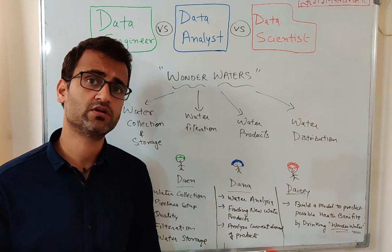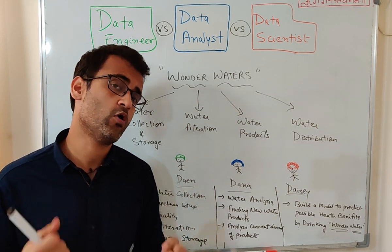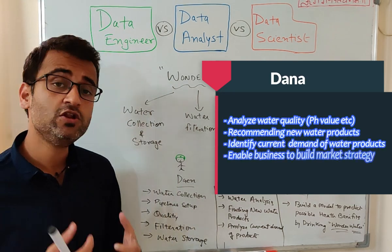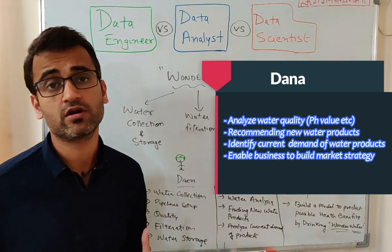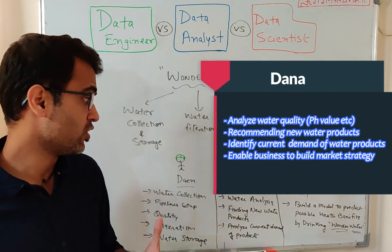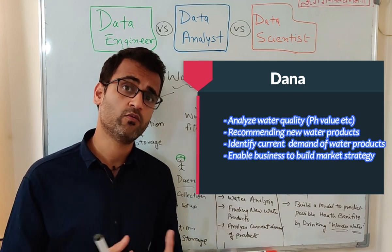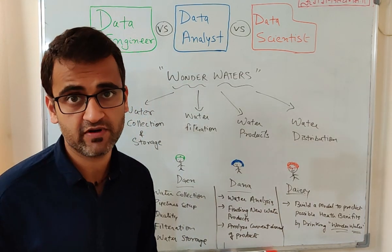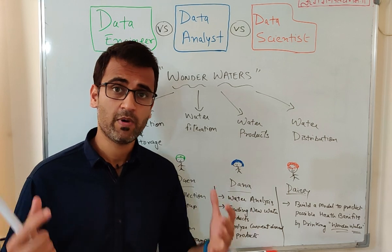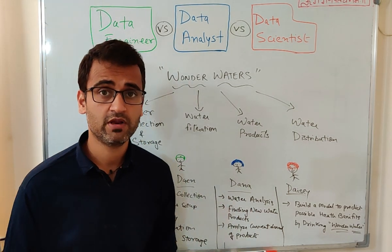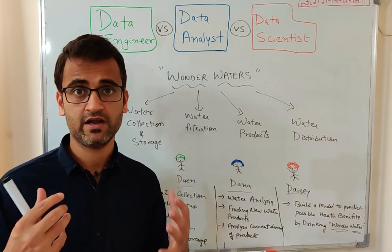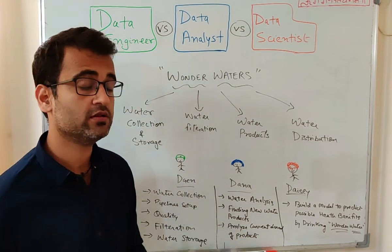Dane is responsible for water collection, setting up all the water pipelines, managing the quality of incoming water, ensuring filtration is happening correctly, and overseeing the overall storage. Dana works on analyzing water quality and different parameters like pH value, and also specializes in recommending new water products and analyzing current market demand by combining incoming data with the sales pipeline.